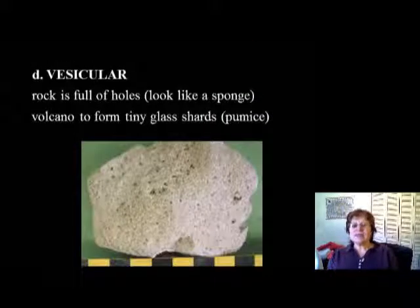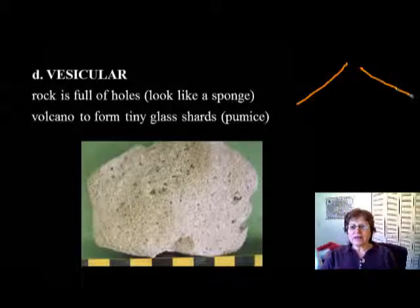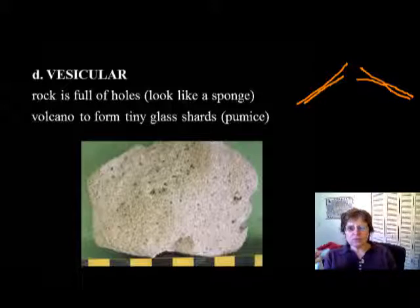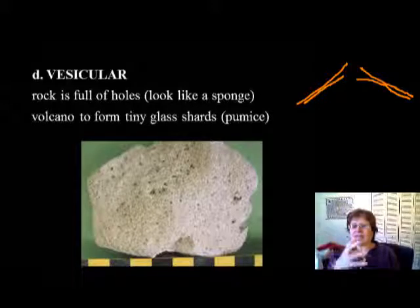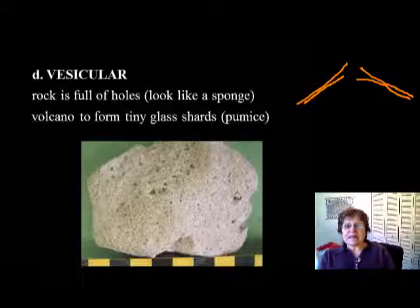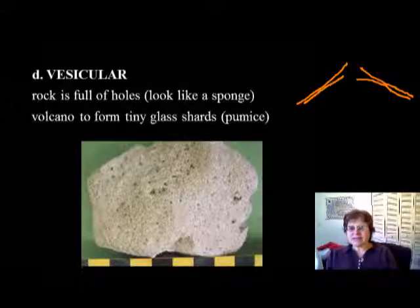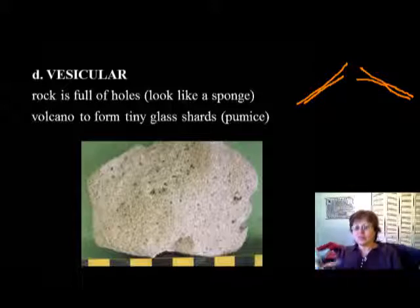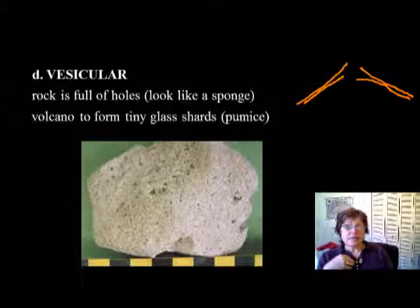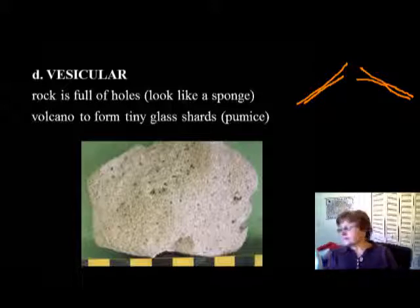The vesicular texture usually forms at the edge of a lava flow near the volcano, where the magma has all the gas bubbles in it. Basically this texture is glass with a lot of gas bubbles — this is what we call pumice. Pumice is the best insulator in the world. In some places like Australia and Hungary, people actually dig houses into this kind of rock because in the summer it keeps cool and in the winter it keeps warm.